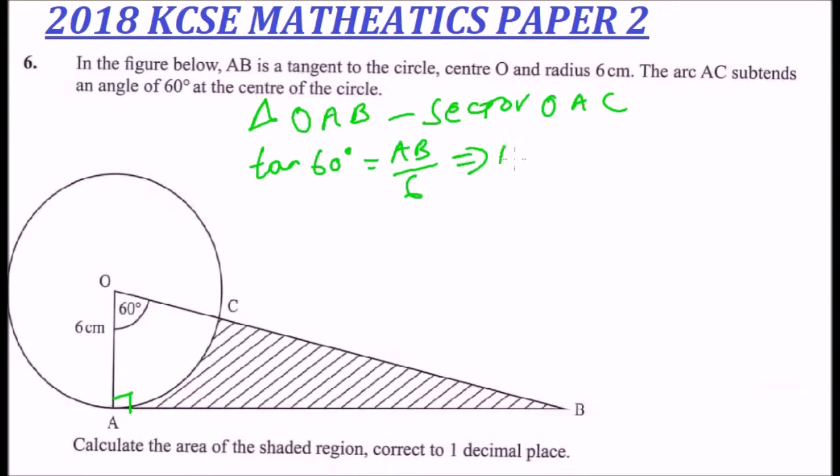This implies that AB is equal to 6 tangent of 60 degrees, and when you work that out using your calculator, you find that AB is 10.4 centimeters. So that is the length of AB.